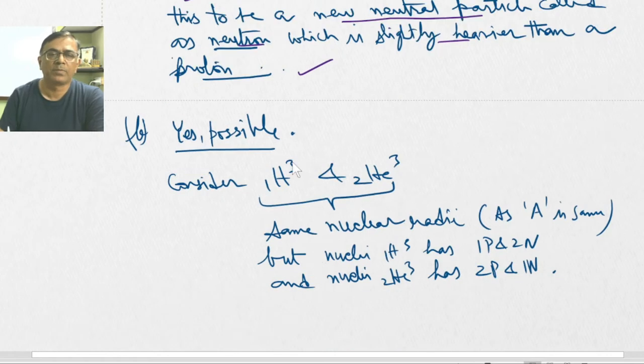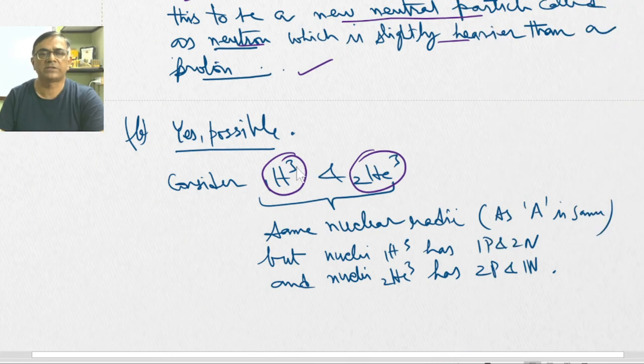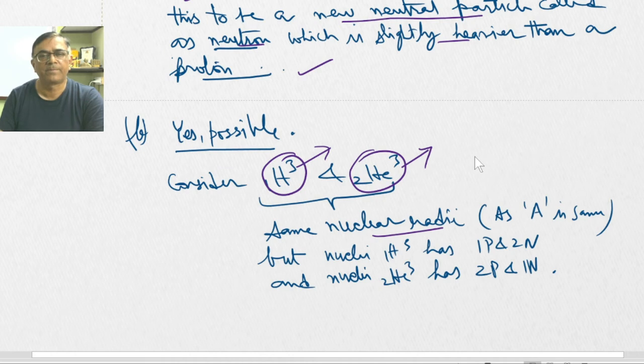Consider tritium nuclei and the isotope of helium. The mass number of both nuclei are the same, and hence the nuclear radii have to be the same, according to the relation R = R₀A^(1/3).